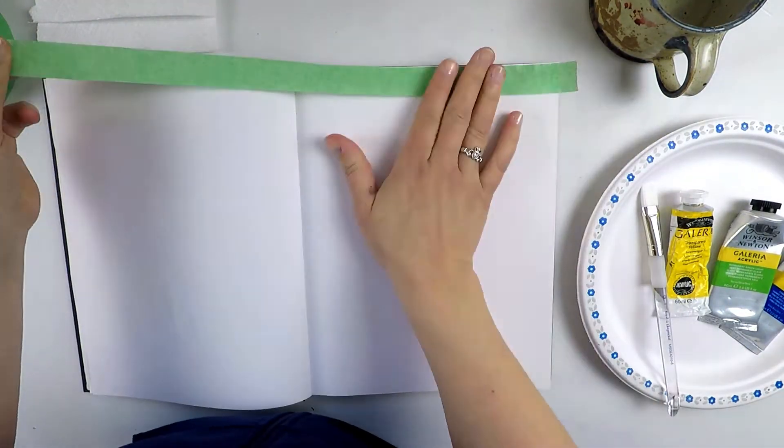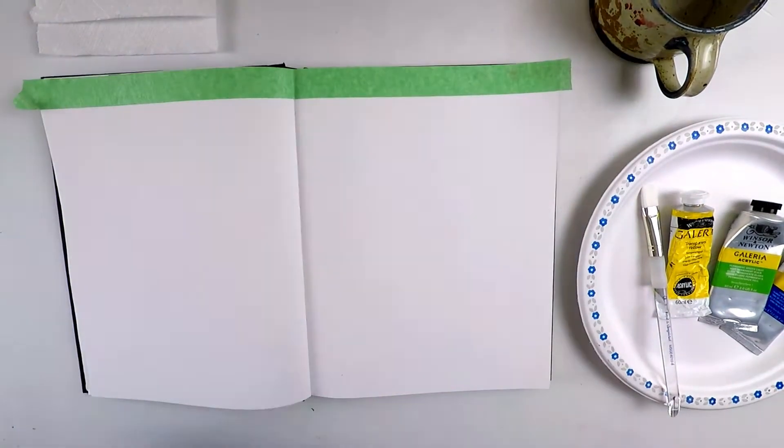Begin by taping off eight boxes across the spread of your sketchbook. Don't forget to de-stick your tape before applying it directly to the paper or it might tear when you remove it.